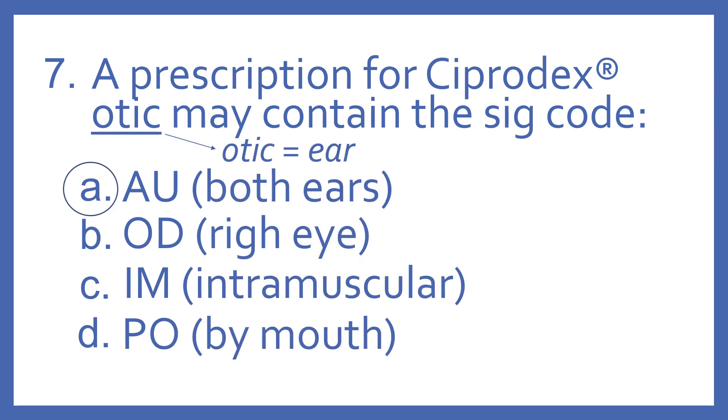And the answer is A, AU. OTIC means ear, so AU, SIG code, means both ears.